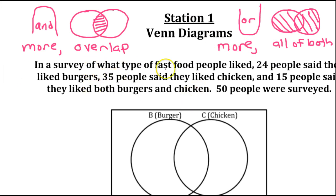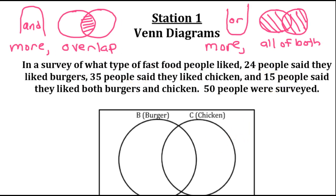Now, in a survey of what type of fast food people liked, 24 people said they like burgers. Hold on. 24 people like burgers. And 35 people said they like chicken. 15 people said they like both burgers and chicken. A total of 50 people were surveyed.